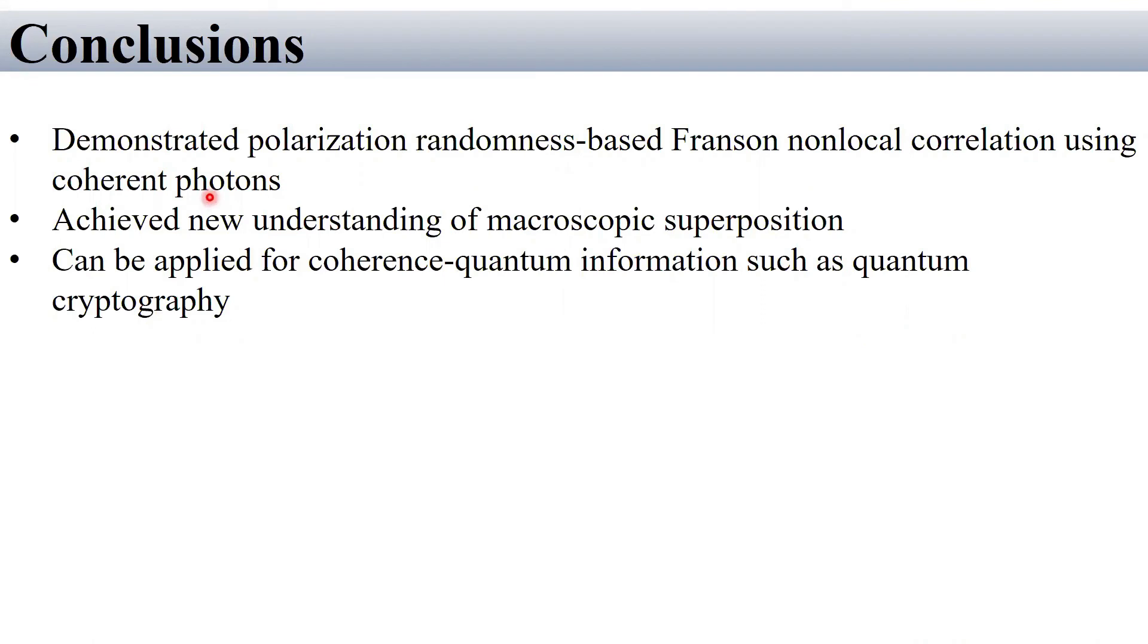Last conclusion. This experiment is to demonstrate polarization-randomness-based Franson non-local correlation using coherent photons. And to achieve new understanding of macroscopic superposition, it can be applied for coherent quantum information such as quantum cryptography. Thank you.